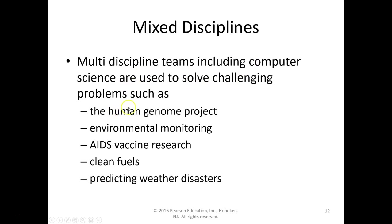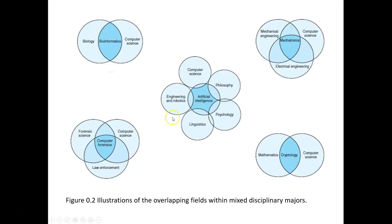Computer forensics, cryptology, and mechatronics also use multiple disciplines including computer science to solve challenging problems. Real-world examples include the human genome project, environmental monitoring, AIDS vaccine research, clean fuel, and predicting weather disasters. These fields sit at the intersection of biology, computer science, mechanical engineering, philosophy, linguistics, and psychology.